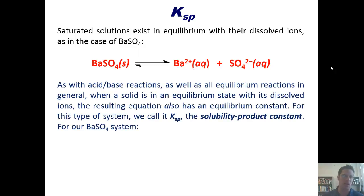As with acid-base reactions, as well as all equilibrium reactions in general, when a solid is in an equilibrium state with its dissolved ions, the resulting equation also has an equilibrium constant. For this type of system, we call it Ksp, the solubility product constant. For this barium sulfate system shown here, Ksp is equal to the individual concentrations of both of the products multiplied together.